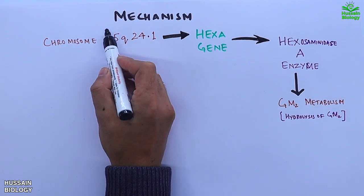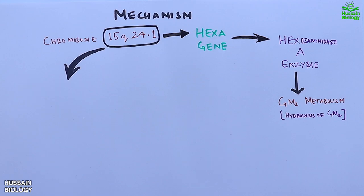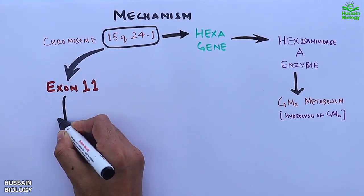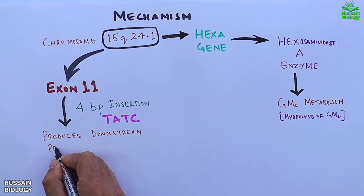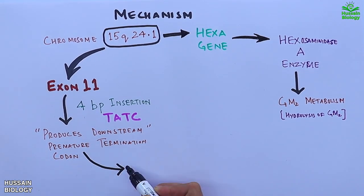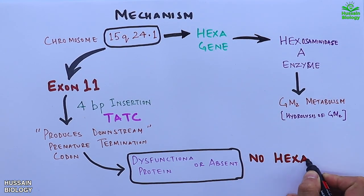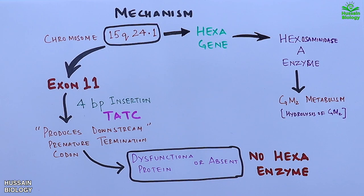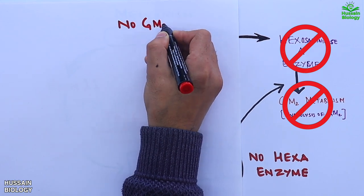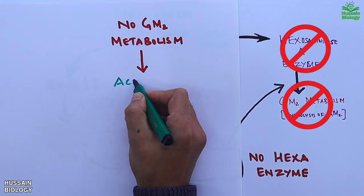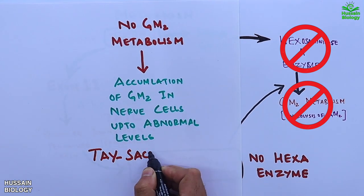The location of the gene on chromosome 15 has a total of 14 exons for the HEXA gene. But it's exon 11 where we get a four base pair insertion in the form of TATC. This insertion produces a downstream premature termination codon that gives us a dysfunctional protein, or sometimes the protein is absent, meaning there will be no hexa enzyme. When we have no hexa enzyme, these steps cease to exist, so we have no GM2 ganglioside metabolism. This leads to accumulation of GM2 gangliosides in the nerve cells or brain up to abnormal levels, and we get Tay-Sachs disease.